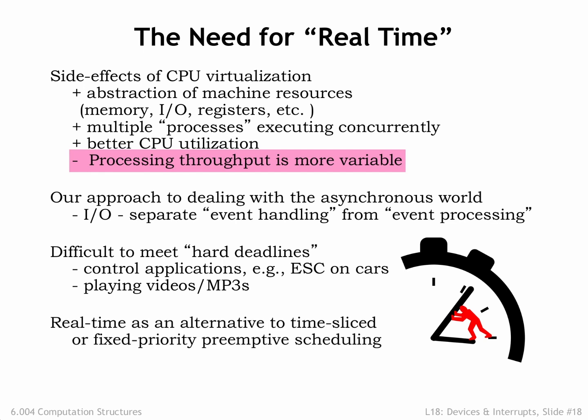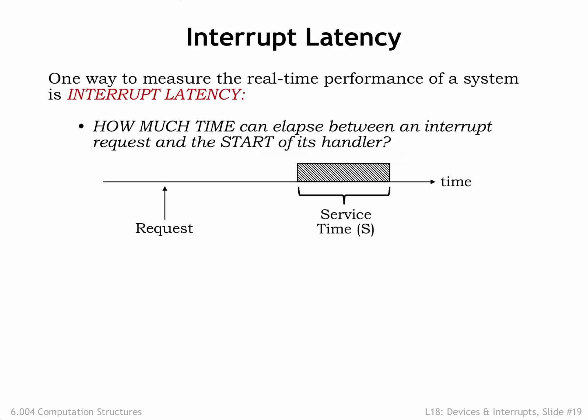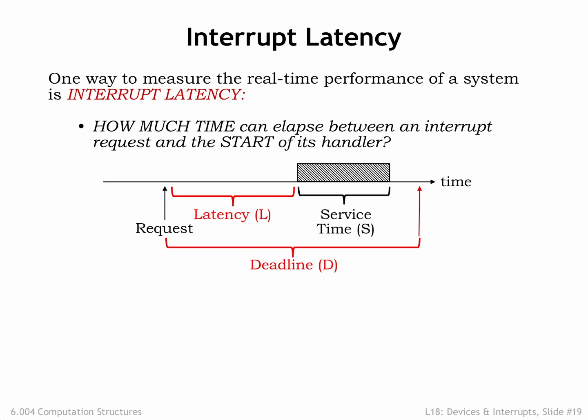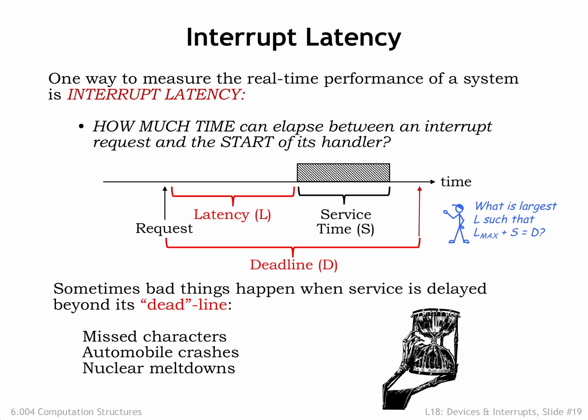To be able to make these guarantees, we'll have to come up with a better way to schedule process execution. Round-robin scheduling won't get the job done. Systems that can make such guarantees are called real-time systems. One measure of performance in a real-time system is the interrupt latency L — the amount of time that elapses between a request to run some code and when that code actually starts executing. If there's a deadline D associated with servicing the request, we can compute the maximum allowable latency that still permits the service routine to complete by the deadline: what's the largest L such that Lmax plus S equals D? Bad things can happen if we miss certain deadlines — maybe that's why we call them deadlines. In those cases, we want our real-time system to guarantee that the actual latency is always less than the maximum allowable latency. These critical deadlines give rise to what we call hard real-time constraints.